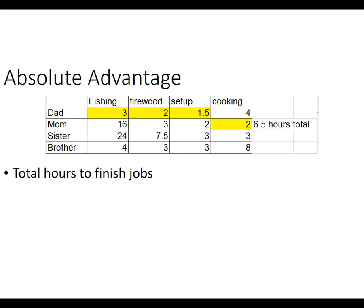So here we have something called absolute advantage. Absolute advantage is essentially whoever is the most productive, or who can do something at the lowest cost. Here we've got a camping trip example with a chart showing hours — the amount of time it takes to finish each task. The dad is a really good camper: he can catch all the fish they need, get all the firewood, and set up the camp in an hour and a half. He's the fastest at those. And the mom is good at cooking.